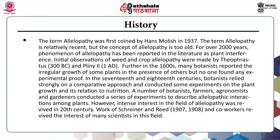In the 17th and 18th centuries, botanists relied strongly on a comparative approach and conducted experiments on plant growth and its relation to nutrition. A number of botanists, farmers, agronomists and gardeners conducted a series of experiments to describe allelopathic interactions among plants. However, intense interest in the field of allelopathy was revived only in the 20th century, notably through the work of Schreiner and Reed in 1907 and 1908.